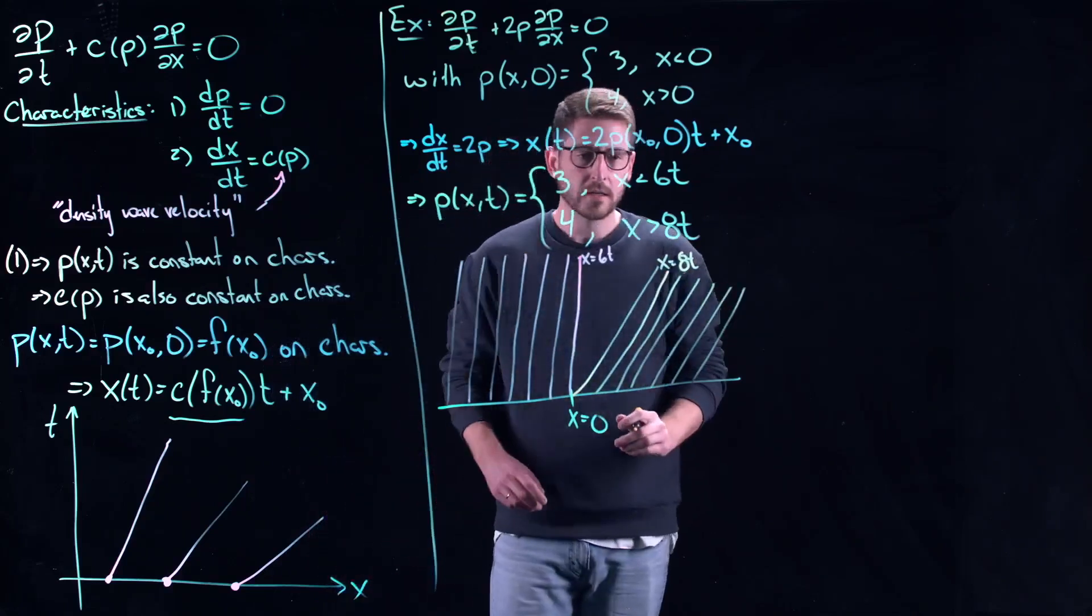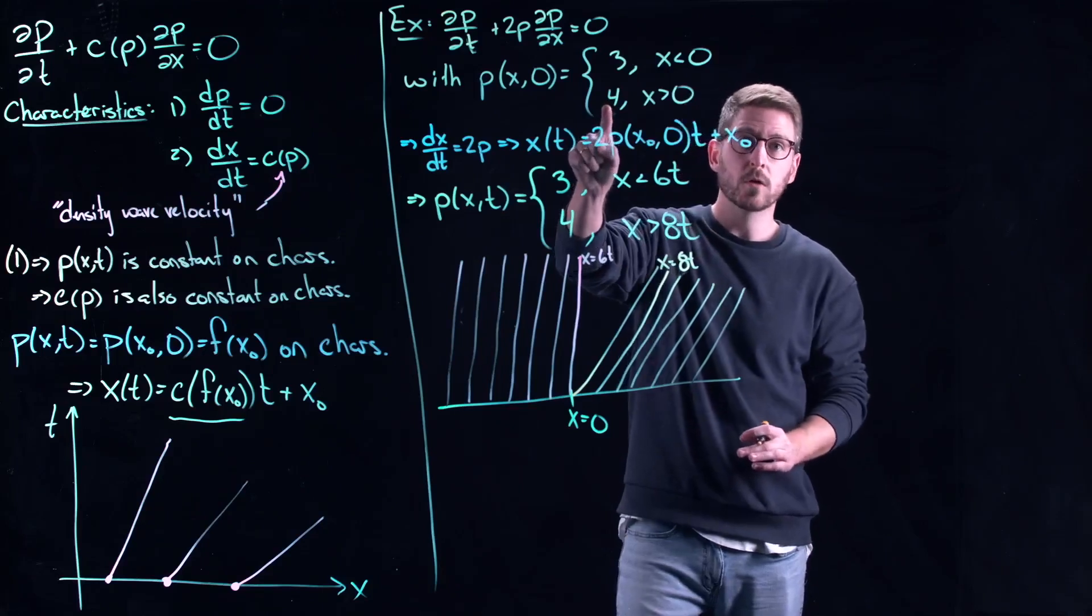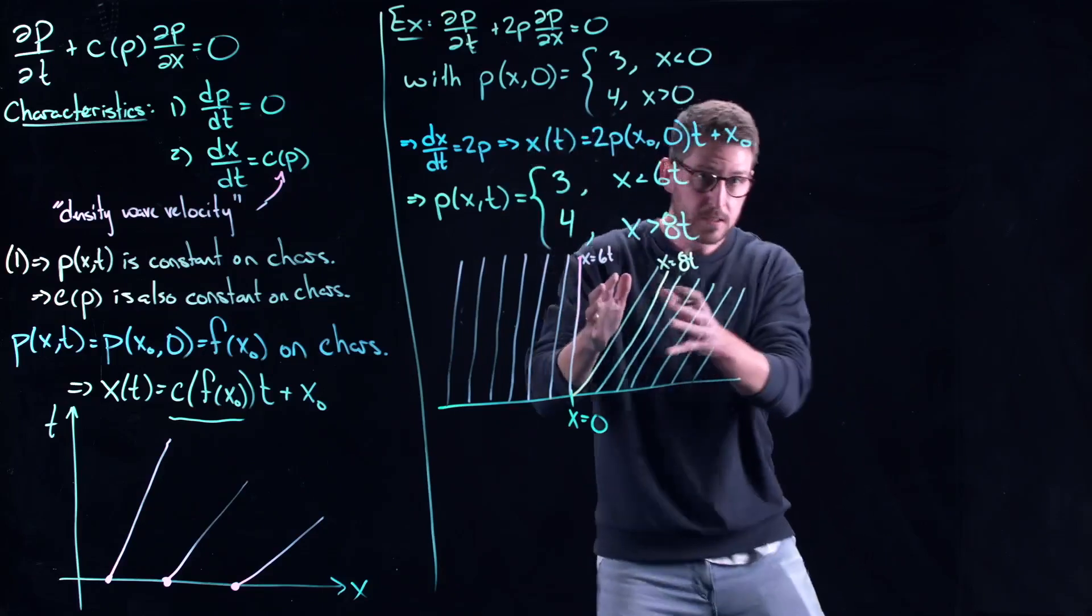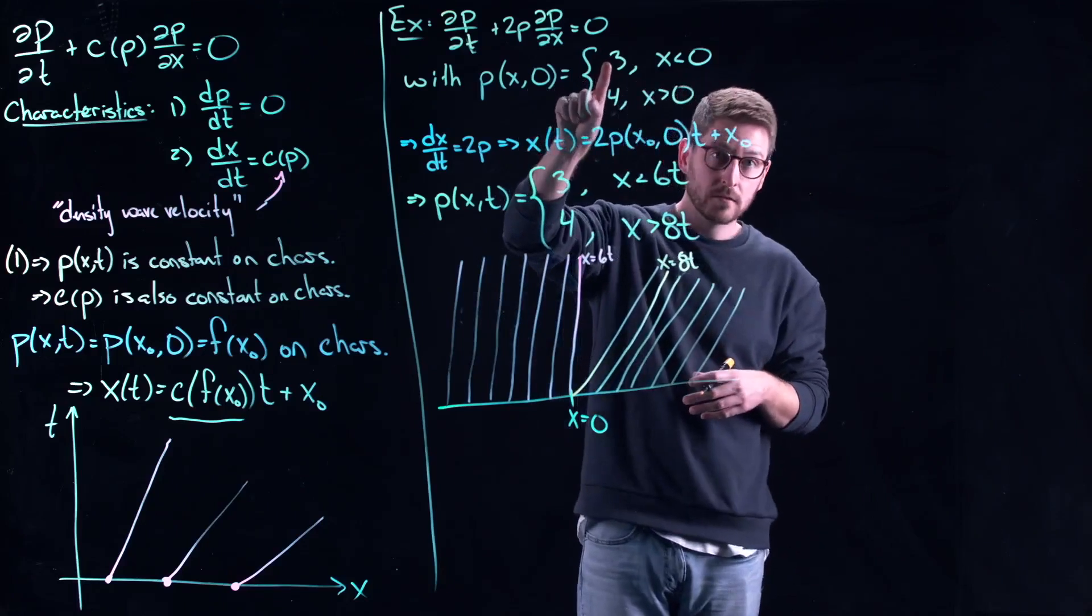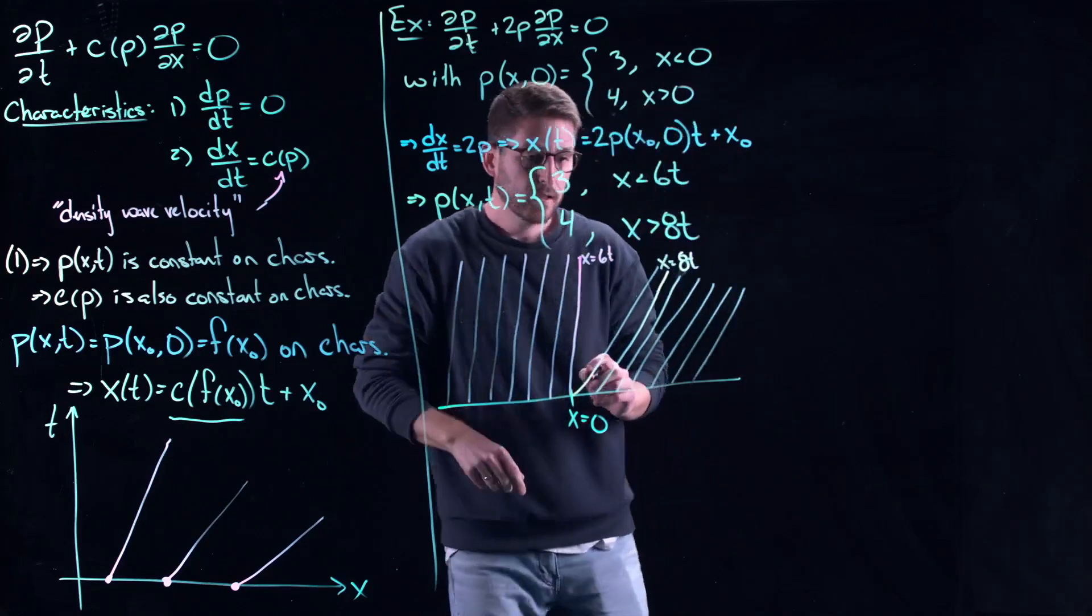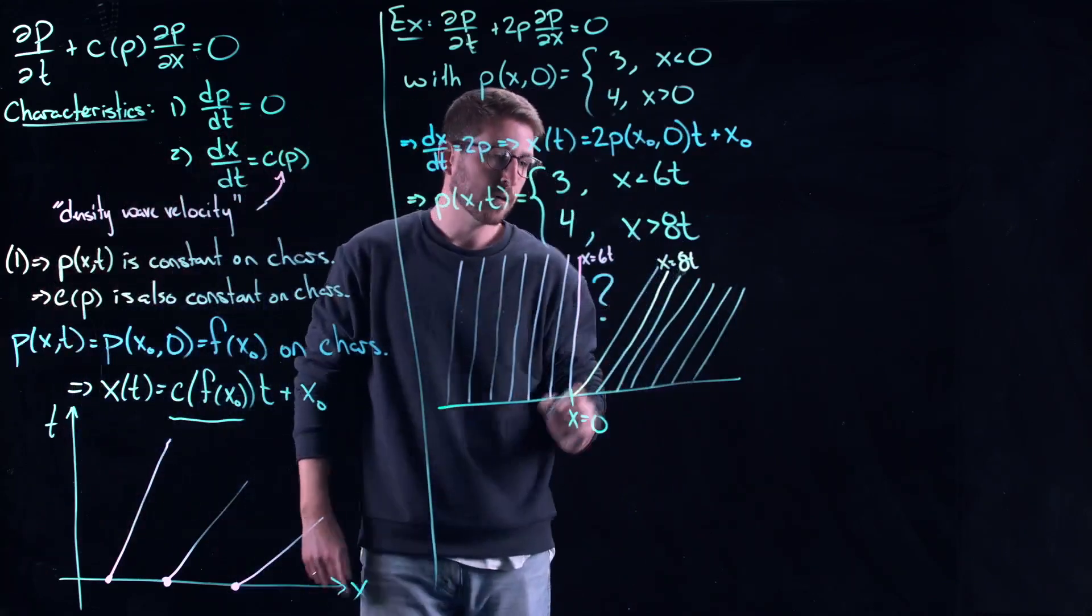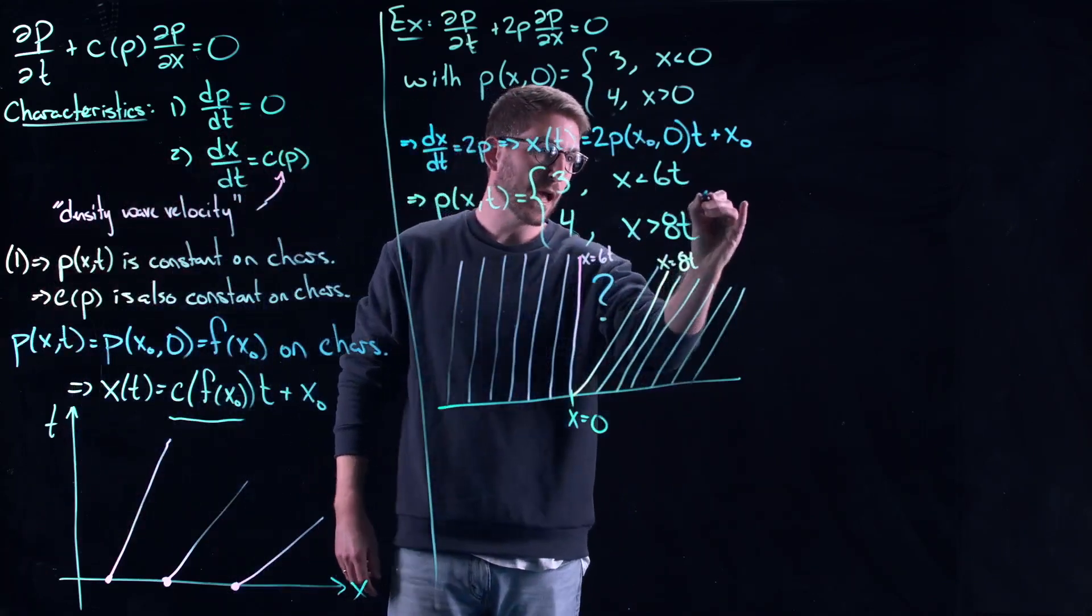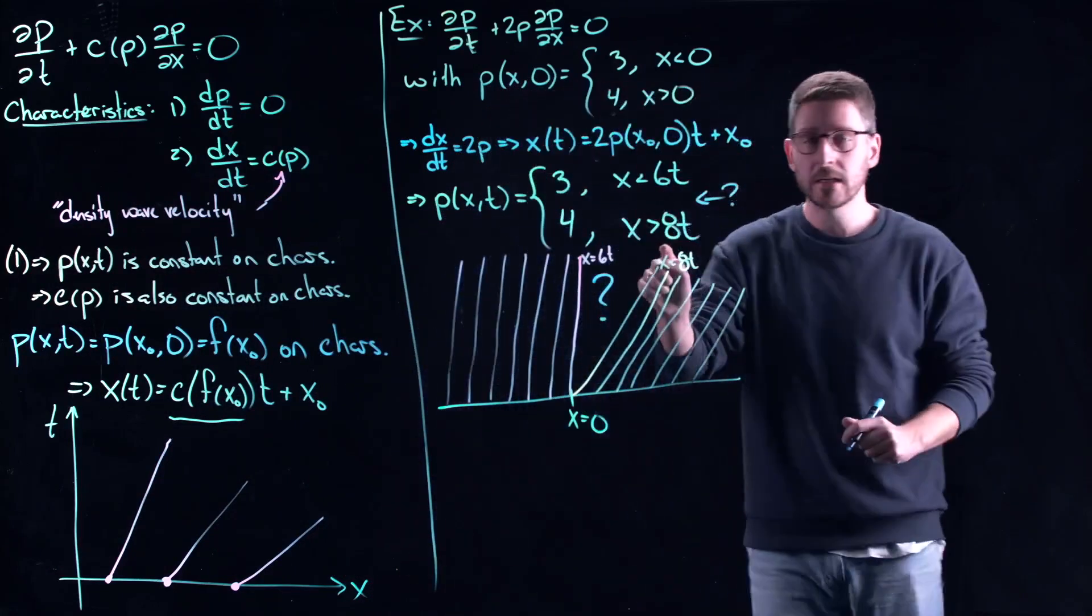So what's happening here is that the front, this part that has 4 of this initial condition, is getting transported faster than the back, which had a 3. So this part's running away. And so then we have the big question to ask ourselves: what about in here? There's clearly a gap that's missing between 6t and 8t.